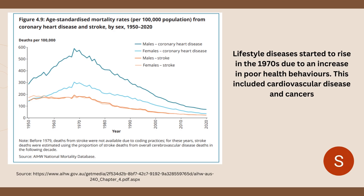As you can see in this graph, towards the end of the 1900s, particularly around the 1970s, new causes of both death and illness occurred. These were mainly lifestyle diseases such as cardiovascular disease and cancer. The rise in lifestyle diseases, which were a direct result of poor health behaviours such as smoking, alcohol use, poor diet and exercise, meant that there needed to be a shift towards education and prevention.